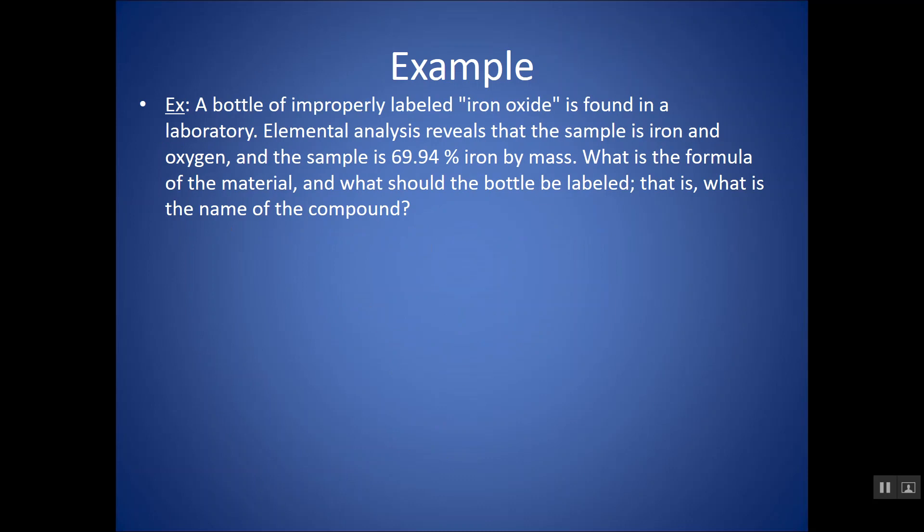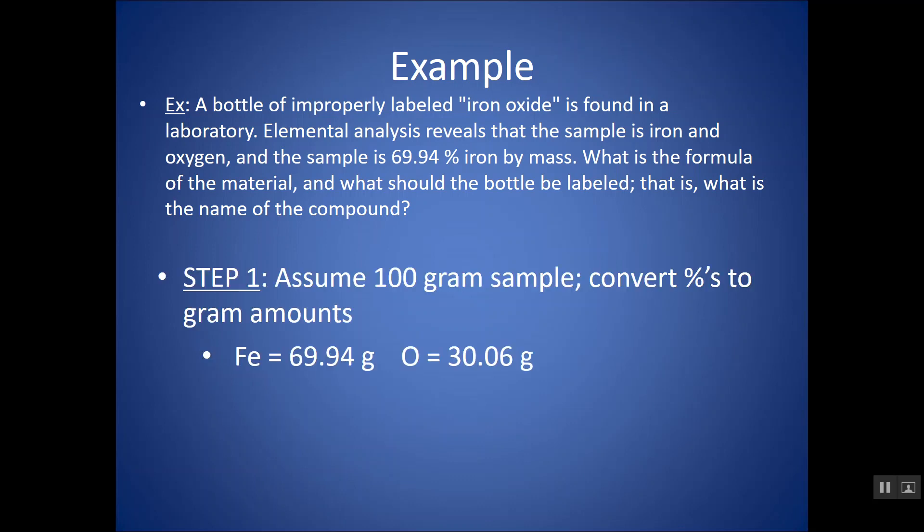Don't forget that sometimes in a problem, especially if there's only two elements in your formula, they might just give you the percent of one element. Well, what should all my percents add up to? They'll add up to 100. So you can always figure out that last missing percent by subtracting from 100. So, for example, in this case, it tells me 69.94% iron. That must mean that oxygen is the difference between that and 100, which is 30.06%.